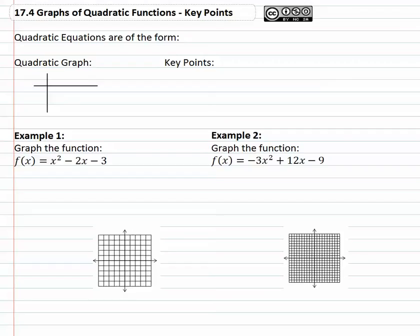In this video, we're going to look at how we can graph quadratic functions. A quadratic function is a function of the form f of x equals ax squared plus bx plus c, where we've got something times x squared plus something times x plus something.